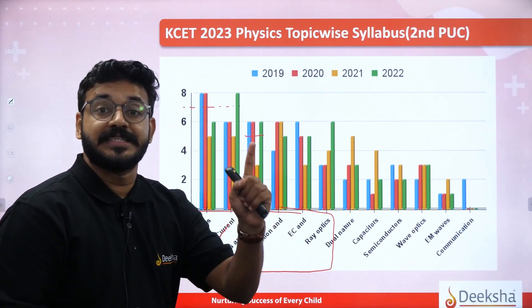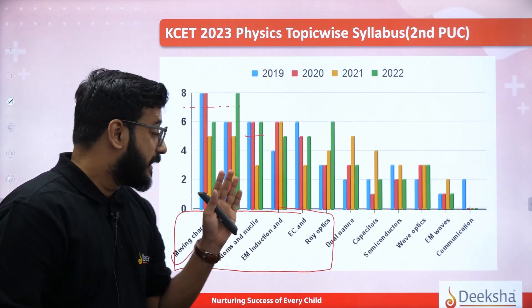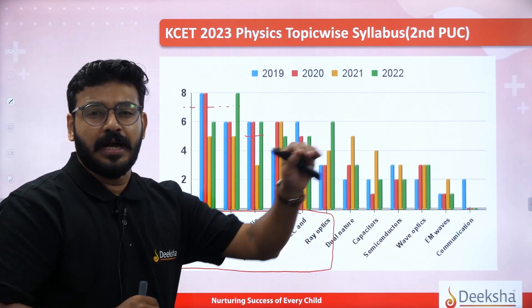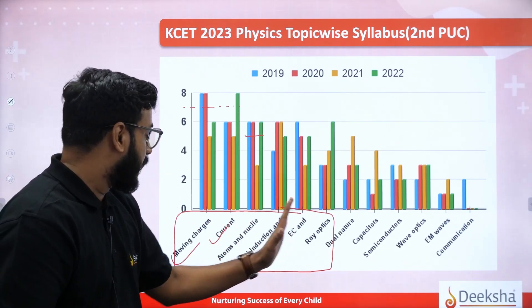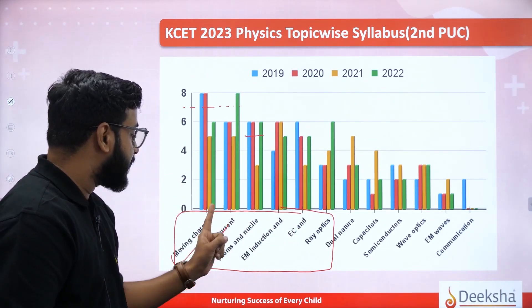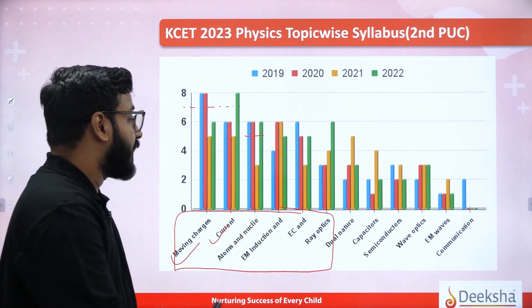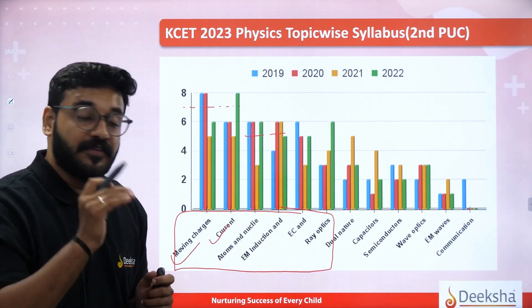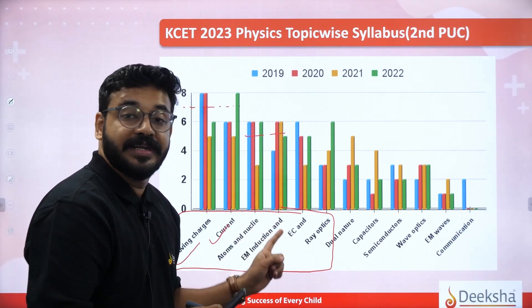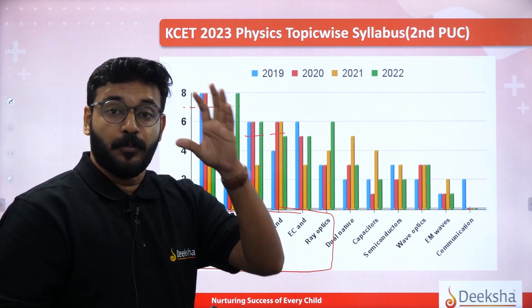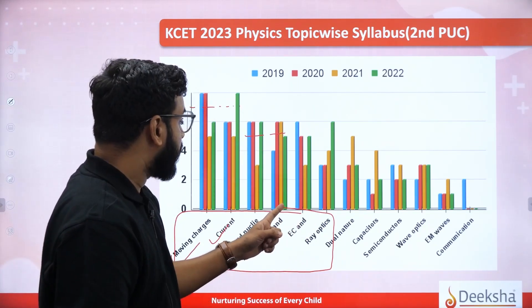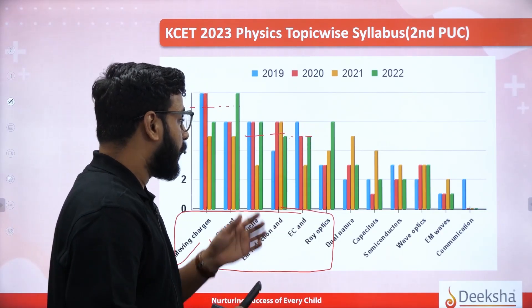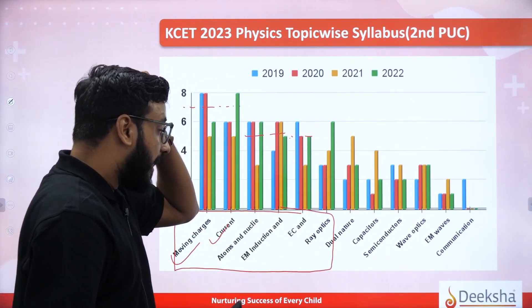Electromagnetic induction and AC is also very important — almost 5 to 6 questions every year. That is more important. Electric charges and potential field — that is also more important, with an average of 4 to 5 questions every year. Note that. These form the high priority list: moving charges, current electricity, atoms and nuclei, electromagnetic induction and AC.